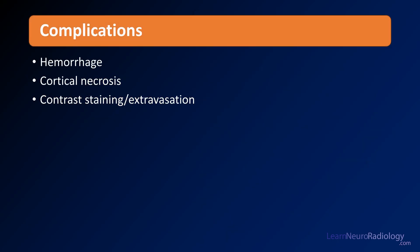Let's think about the complications that you can see after stroke. The ones that you have to think of commonly are hemorrhage, hemorrhagic conversion of an infarct, cortical necrosis, and contrast staining and extravasation.